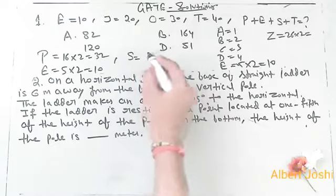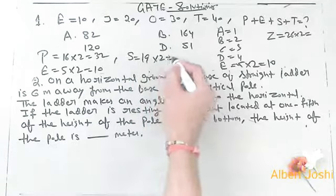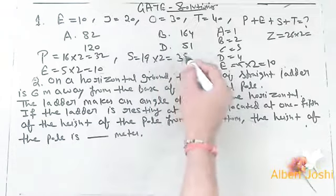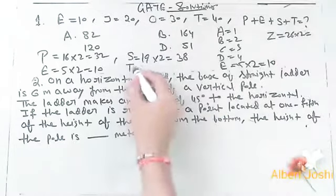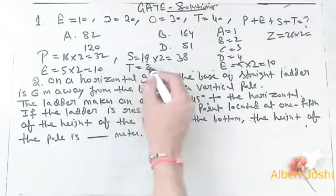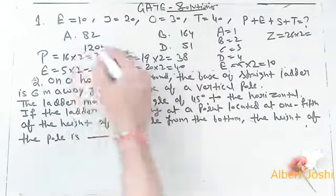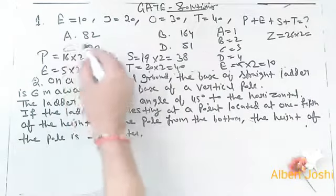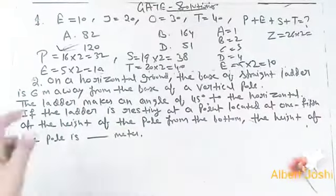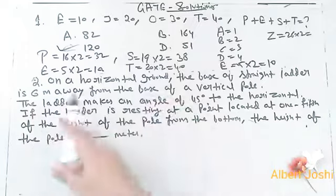Then T, what is the meaning of T? T is equal to 20. 20 into 2 equals 40. If we add all the numbers together, we get 120. That is the answer.